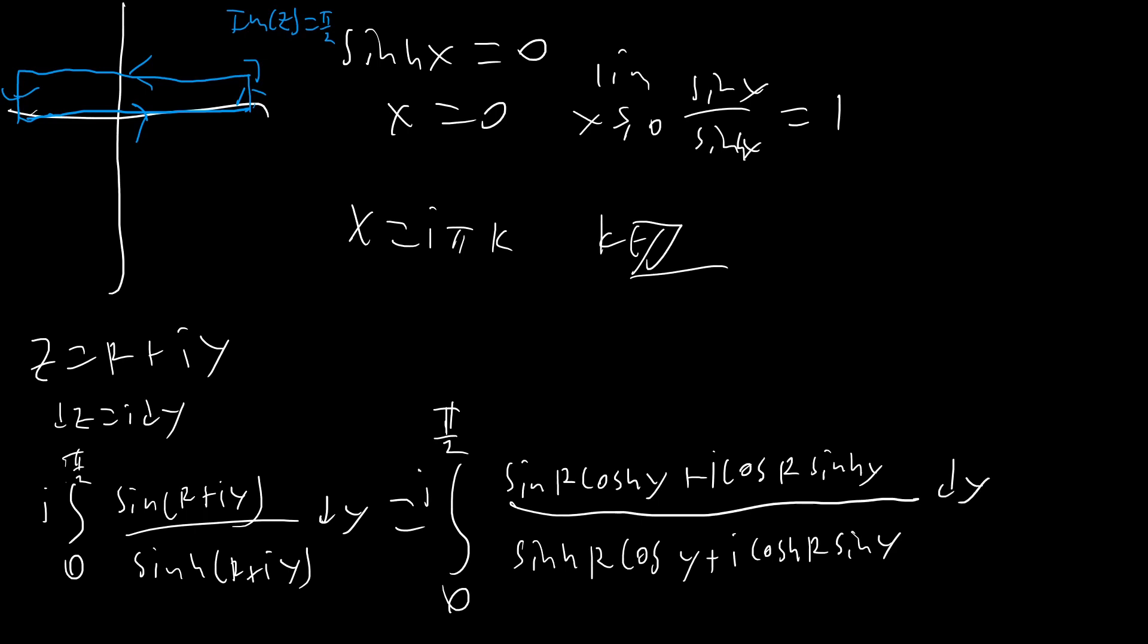And so as you can see here, we have this nice expansion. Now, the first thing I want to say is, as y varies a lot from 0 to pi over 2, cosine y will start at 1 and then it'll slowly go to 0. And sine y will start at 0 and it'll slowly go to 1.